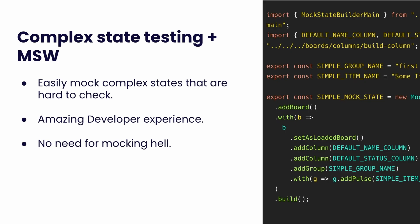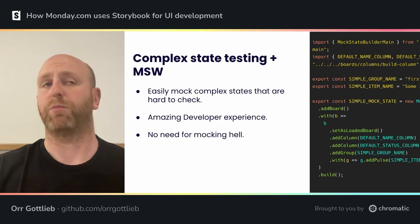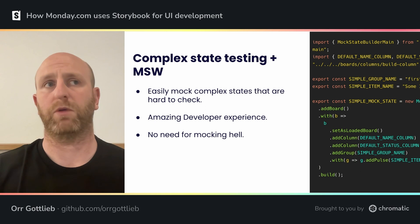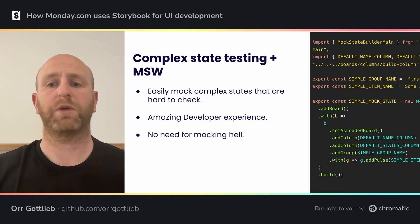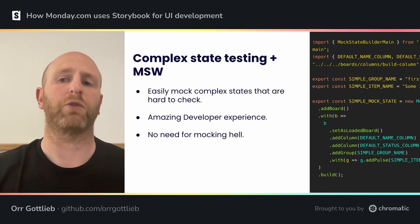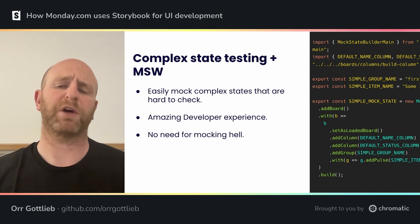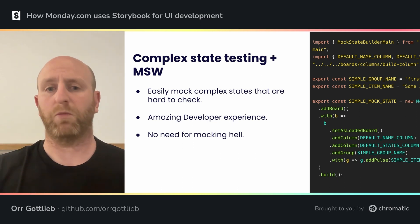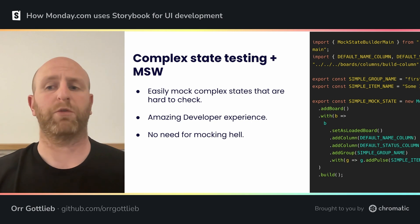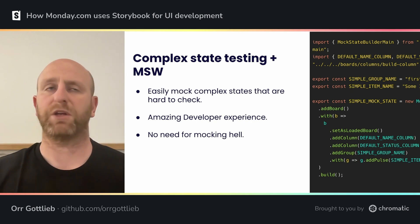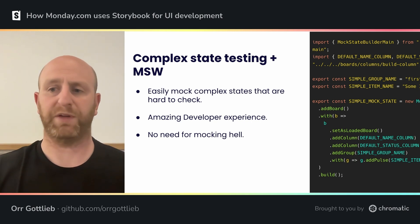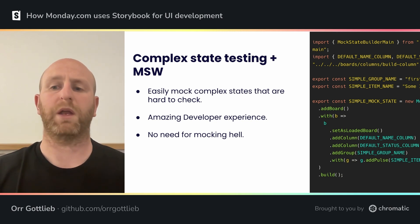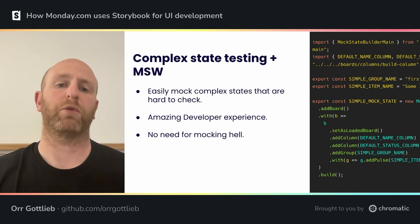The second use is creating complex states of our stories with mock service workers. We have stories for our most complex pages, like our boards or dashboards. We leverage a mock service worker plugin within Storybook to simulate real-world use cases, basically running our entire monolith within Storybook. This unique ability, combined with our unique state builder, provides amazing developer experience writing complex stories, and our developers don't need to mock anything just to render a component.